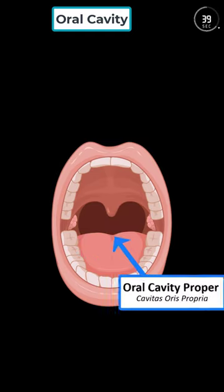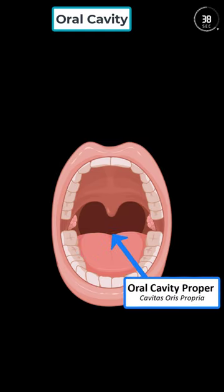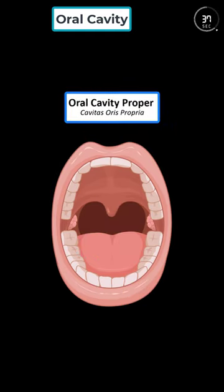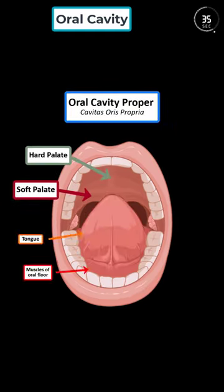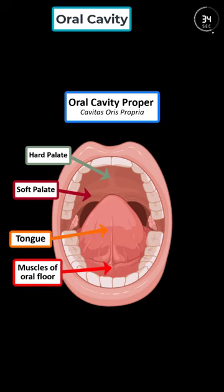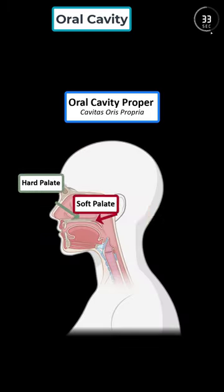Inside the oral cavity proper, we will find structures like the hard and soft palate, the oral floor muscles, and the tongue. The hard palate is the front part. The soft palate, at the back, is a muscular organ that is crucial for swallowing.